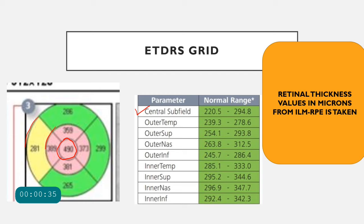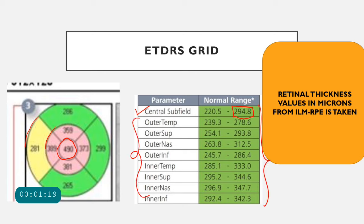The patient's macular thickness is compared with normative data already fed into the machine — a range of macular thickness seen in the normal population. This comparison produces different color codes: green indicates the safe zone, yellow is moderate, and red indicates abnormal macular thickness — the danger zone. The normal central subfield thickness is approximately 220.5 to 294.8 microns. The various other sectors and their normal ranges are also given in this table.